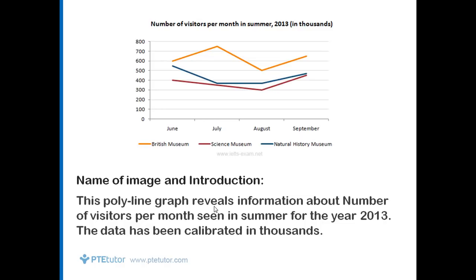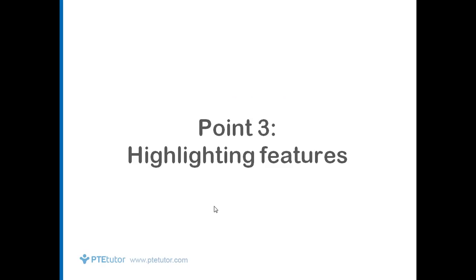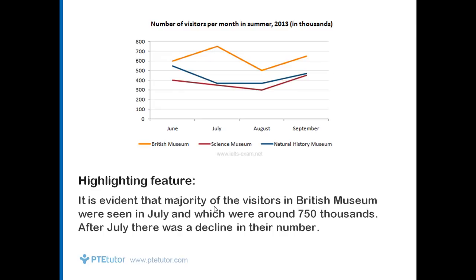Next, let's implement the third point — the highlighting feature. For this polyline graph: 'It is evident that the majority of the visitors in British Museum were seen in July, which were around 750 thousand, because the data is calibrated in thousands. After July there was a decline in their number.'